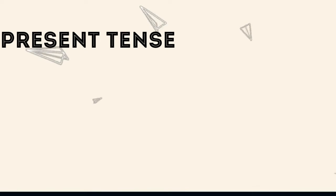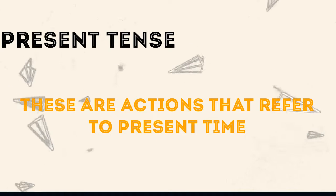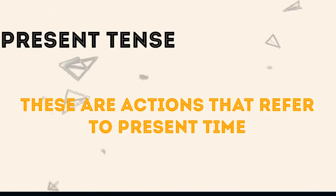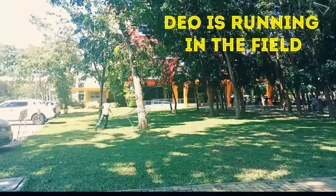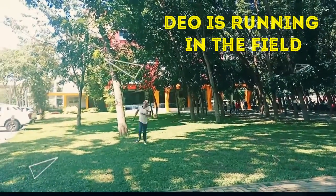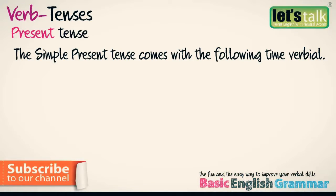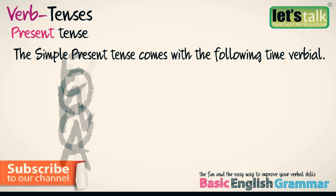Present tense — these are actions that refer to present time. Dio is running in the field. Running, as used in the sentence, indicates present time. Simple present tense comes with the following time adverbials: Every day, Often, Never, On Sundays, Always.